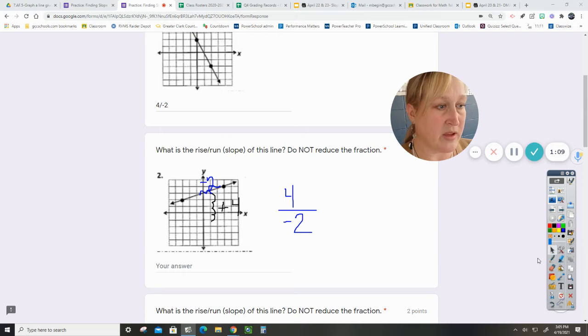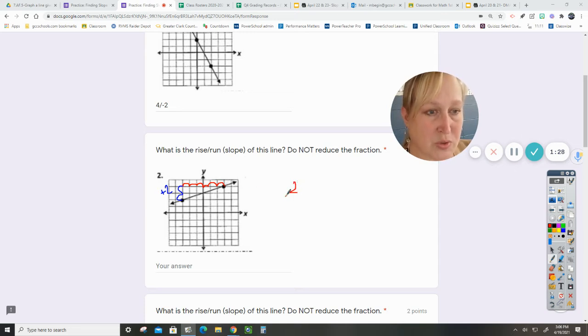We will quickly correct this one. I'm going to think again. Rise one, two, so that's up two, and then run one, two, three, four, five, six. So the rise was two, the run was six, which is two over six.